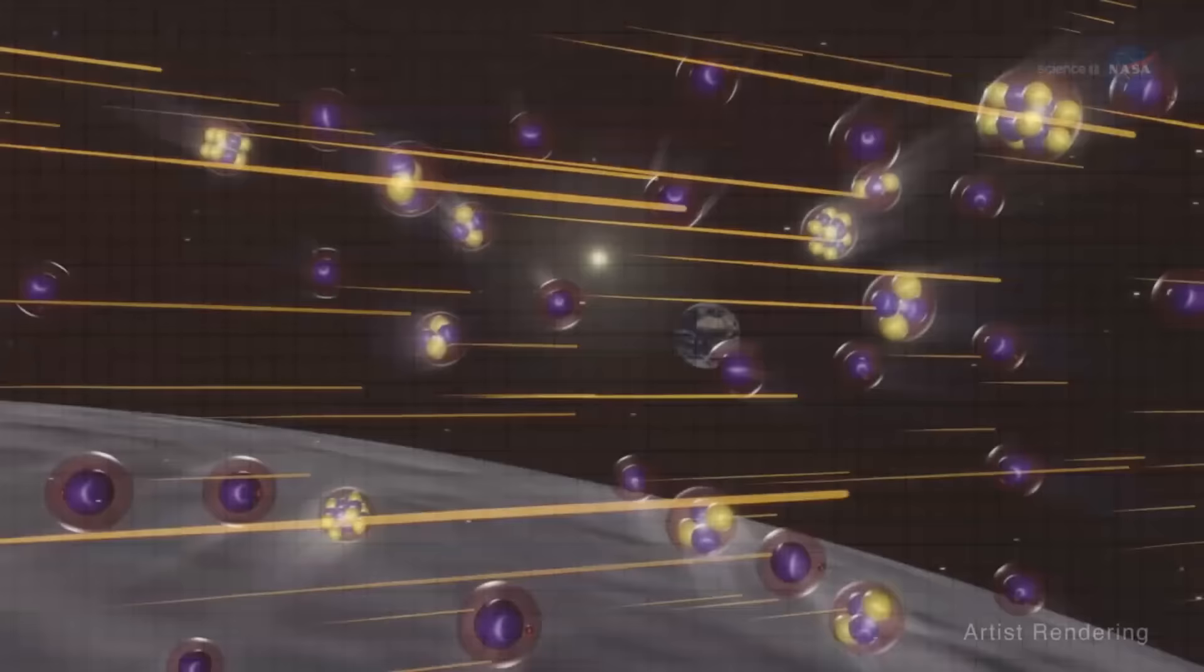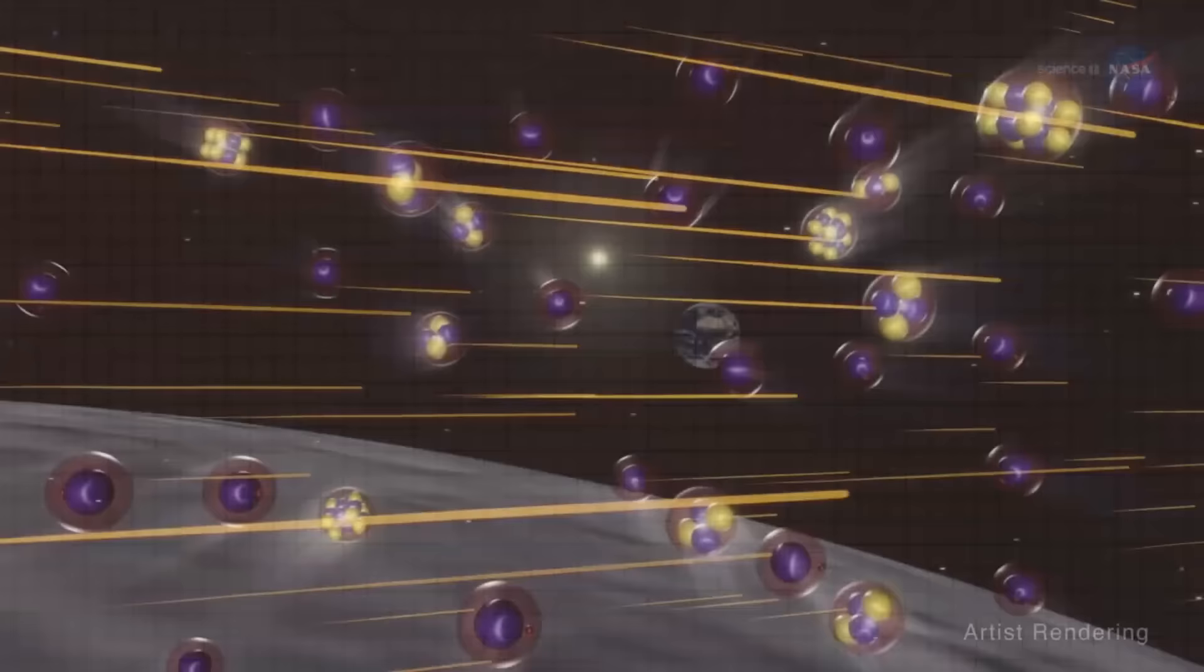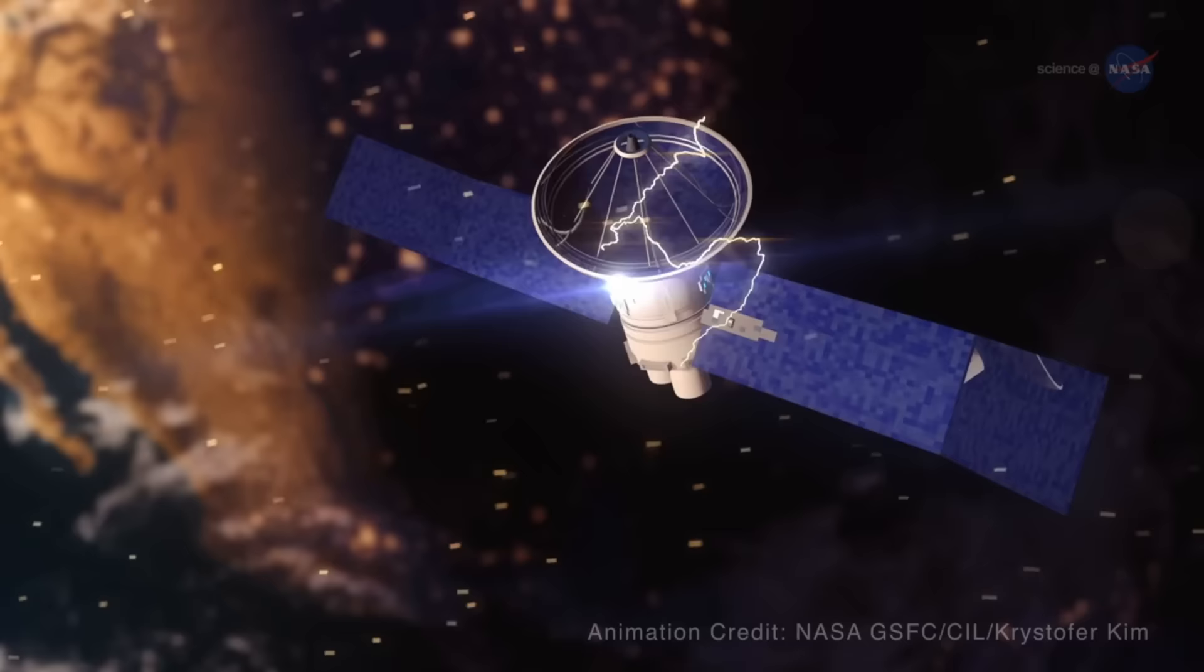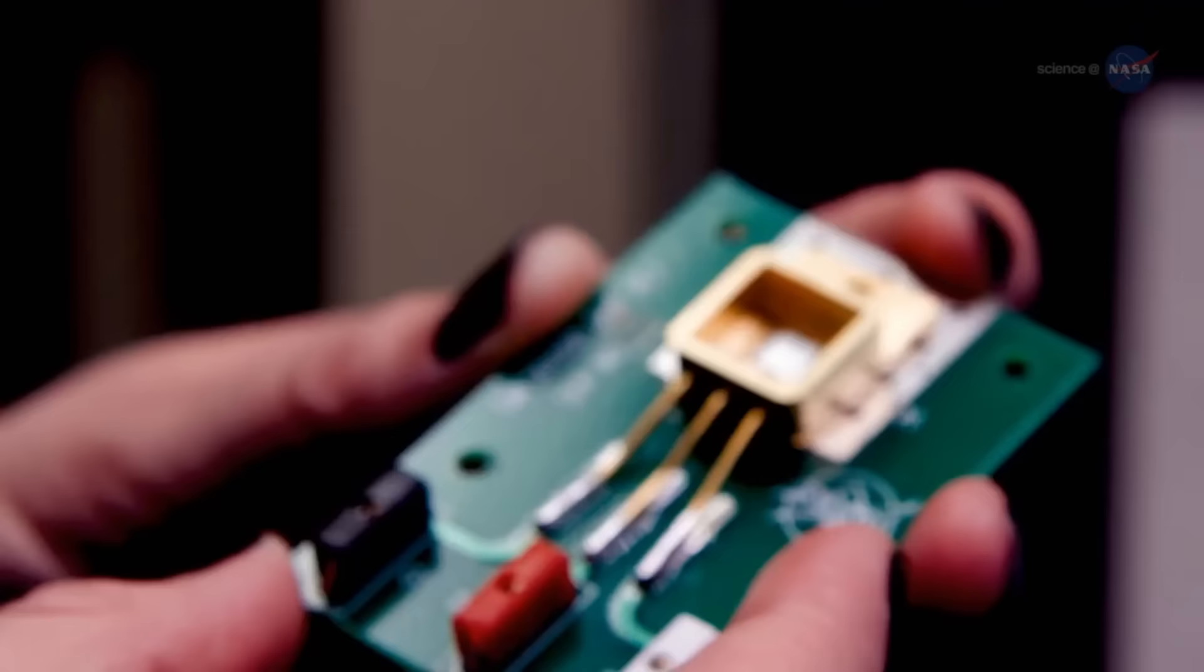Furthermore, researchers previously predicted that the upcoming solar maximum could pose a major problem for Earth's communication systems. The most intense solar storms can sometimes result in catastrophic orbital decay of low-Earth orbiting satellites and disrupt satellite-based services such as communications and navigational networks.